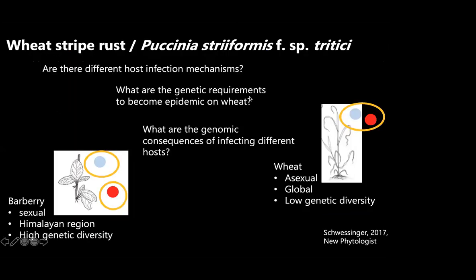That was a snapshot of our genomic data contributing to our larger biosecurity research goals. We have additional questions to address: comparing infections across different hosts, and identifying which effectors are recognized by different wheat lines — which is also important for breeding.